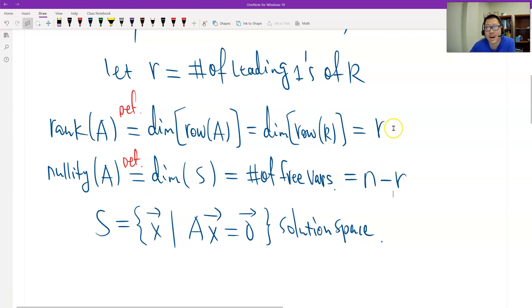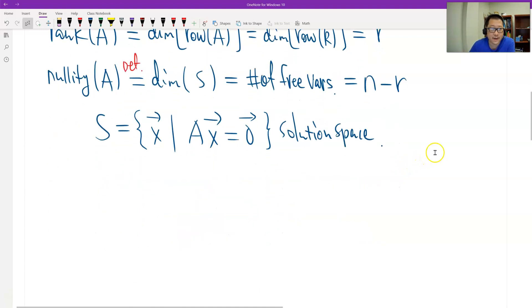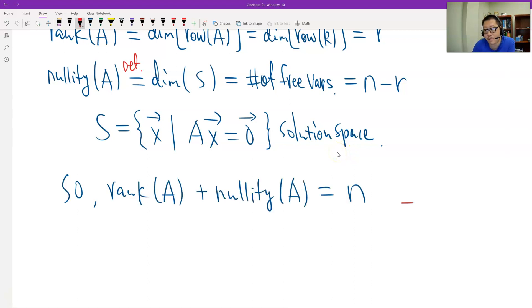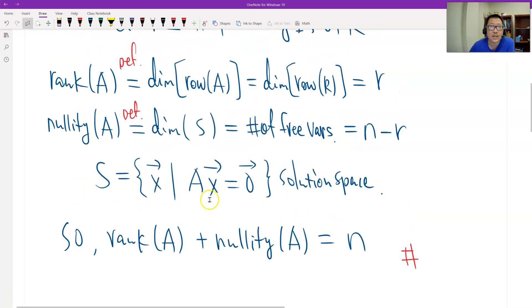And the rank is r. I add the two together, what do we get? Of course is the number of columns n, right? So therefore, the result is proved. That's all, thank you.